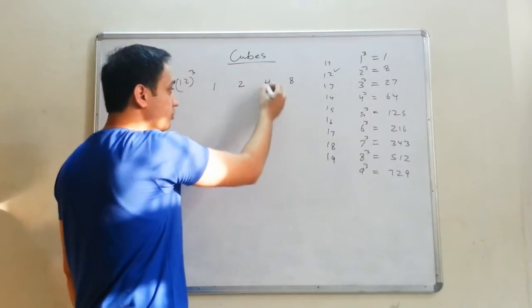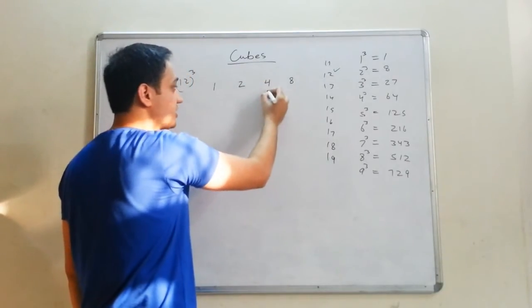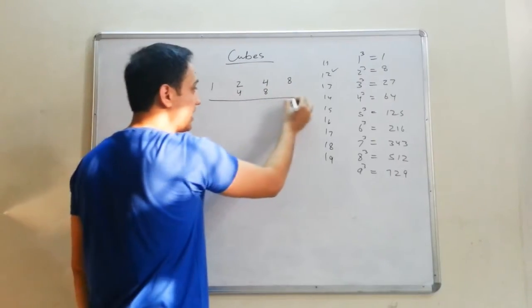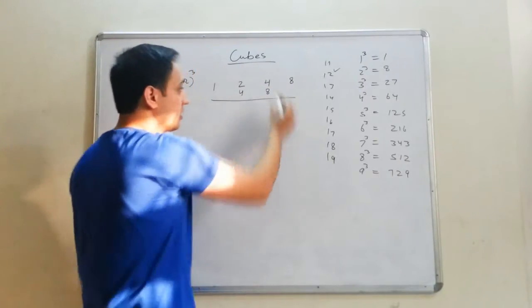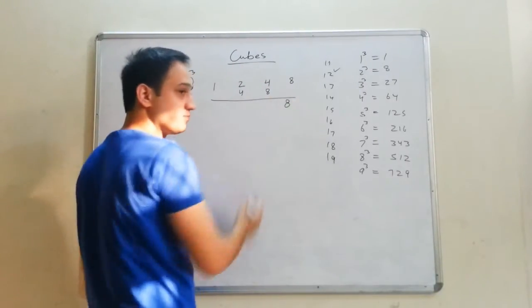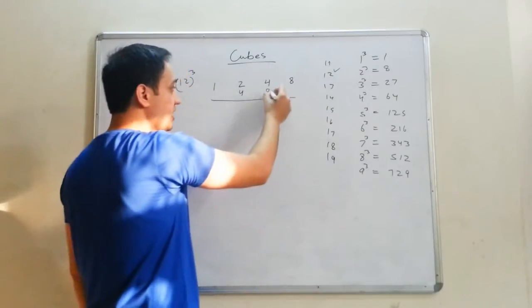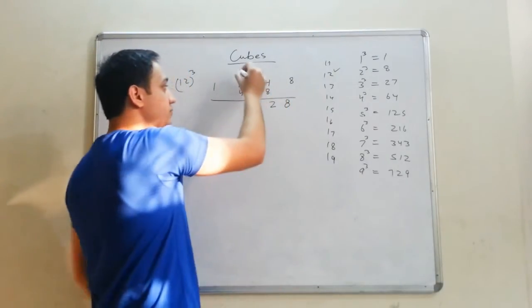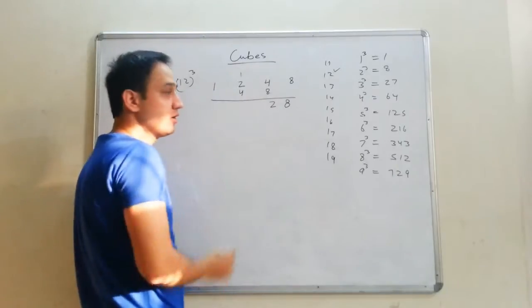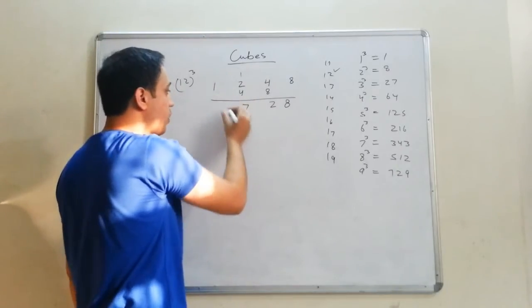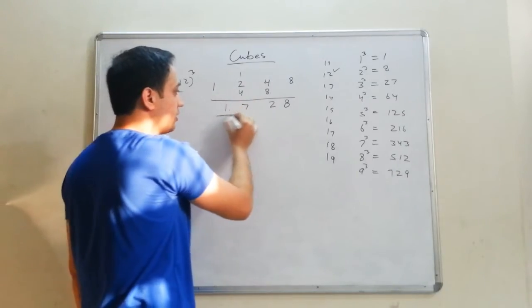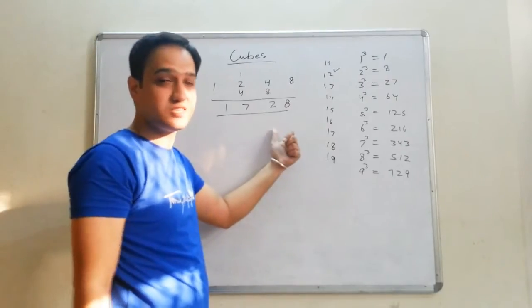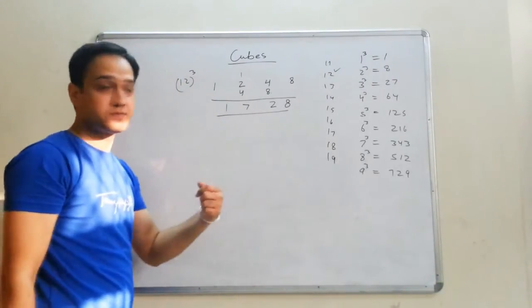I'll double both these numbers — 8 and 4 — giving 16 and 8. Now add all these numbers: 8, then 8 plus 4 is 12, write 2 carry 1, then 1 plus 4 is... the result is 1, 7, 2, 8. This is the cube of 12.